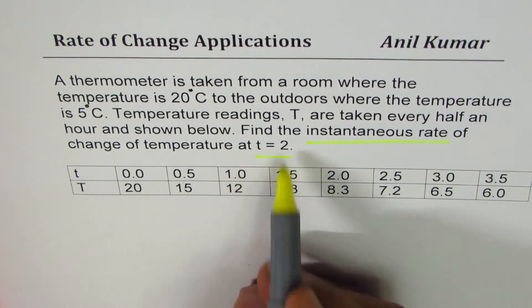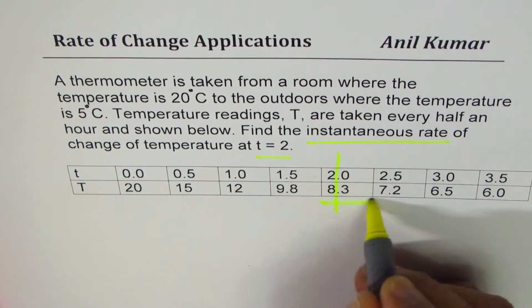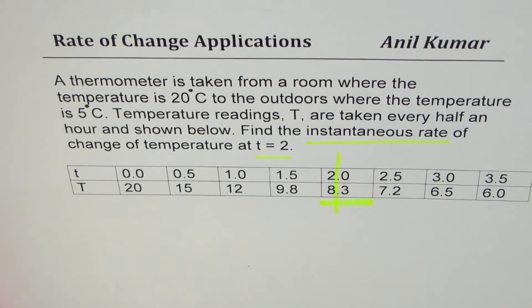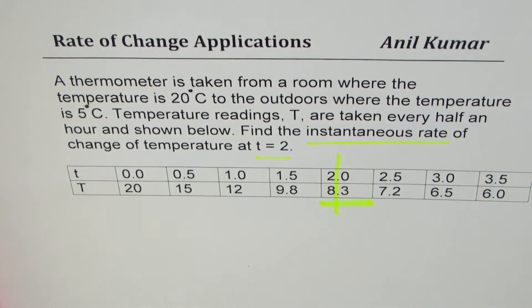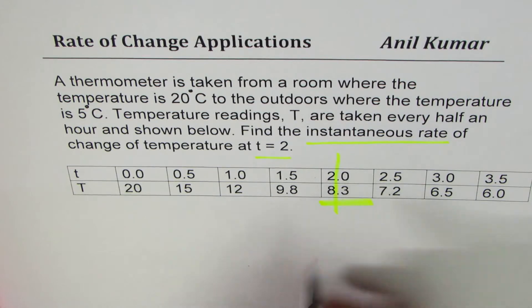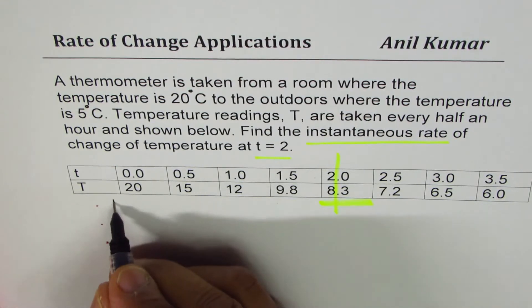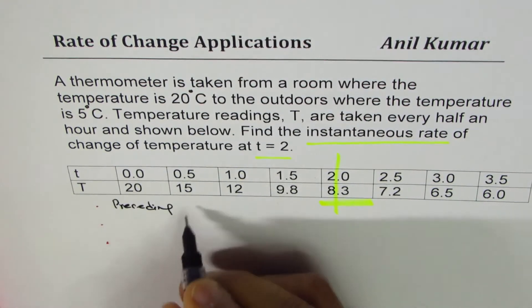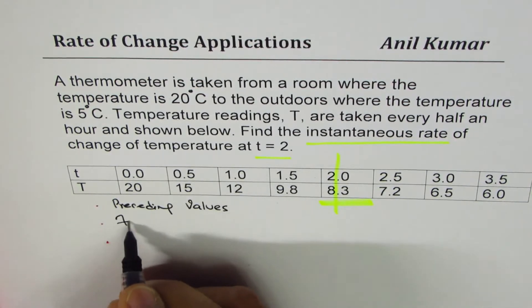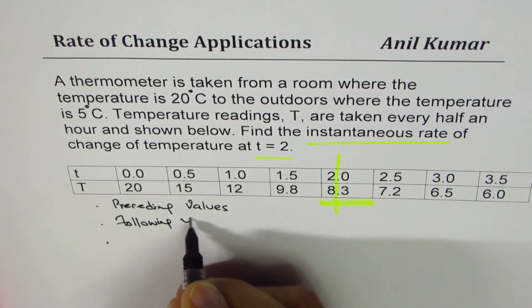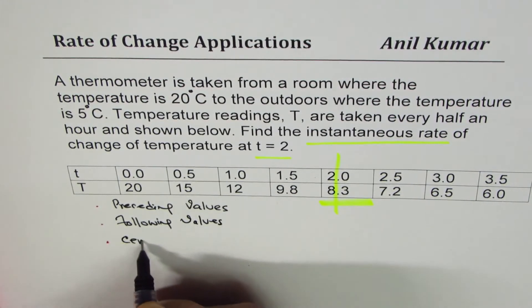This is what you are interested in finding - instantaneous rate of change. In the previous example we did average rate of change, so we had two values. When you do instantaneous rate of change, there are three different methods which could be used: one is to use preceding values, one is to use following values, and one is to use centered value.